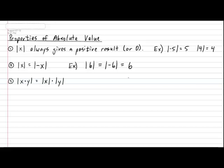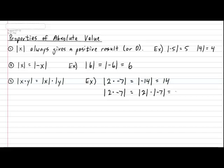Let's take a look at a quick example of this in action. Suppose I ask you to calculate the absolute value of 2 multiplied by negative 7. If you do it without changing anything, this is the same as asking what is the absolute value of negative 14, which is 14. Now, using this property, the absolute value of 2 times negative 7 can be rewritten as the absolute value of 2 multiplied by the absolute value of negative 7. That gives you 2 multiplied by 7, which is again 14. This is what is known as the absolute value of a product.